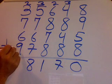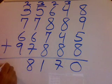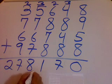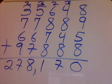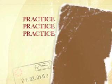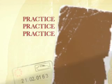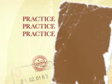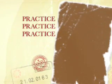Then 5 and 7 is 12, plus 6 is 18, plus 9 is 27. The answer is 278,1170. You can check the answer. Thank you.